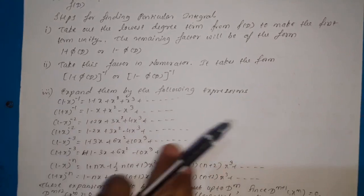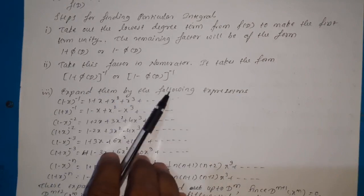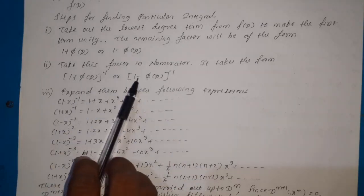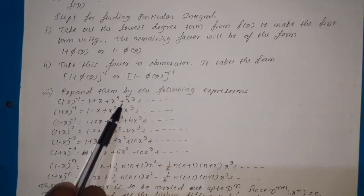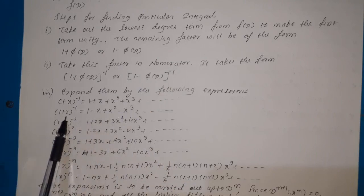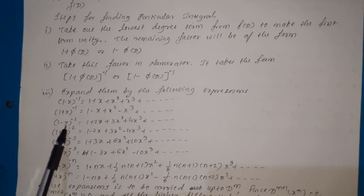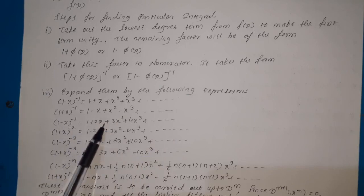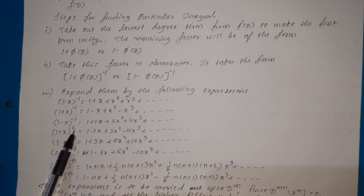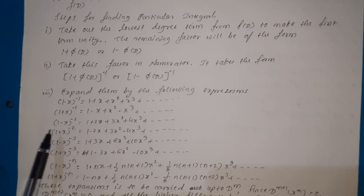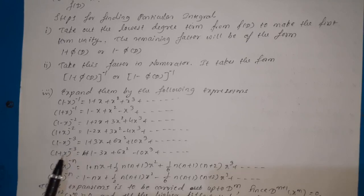The last step is to expand these expressions accordingly using the following expansions: (1 − x)^(−1) = 1 + x + x² + x³ + ..., and (1 + x)^(−1) = 1 − x + x² − x³ + ... Also, (1 − x)^(−2) = 1 + 2x + 3x² + 4x³ + ..., and (1 + x)^(−2) = 1 − 2x + 3x² − 4x³ + ... If the sign in the bracket is plus, we get alternating signs in the expansion; if negative, all terms are positive.